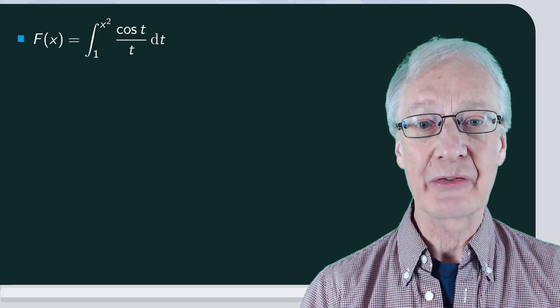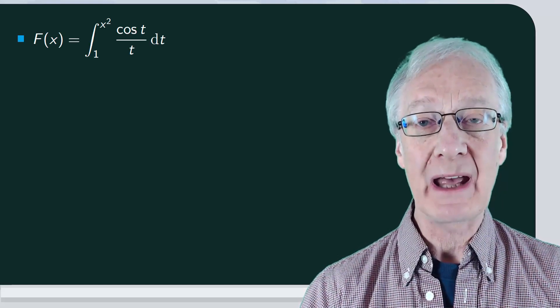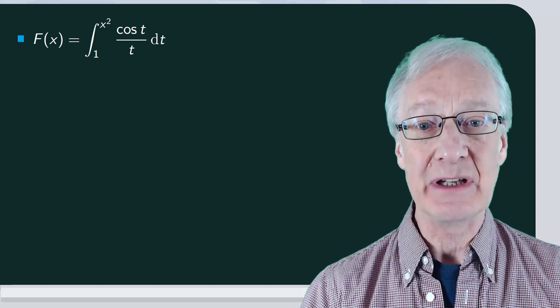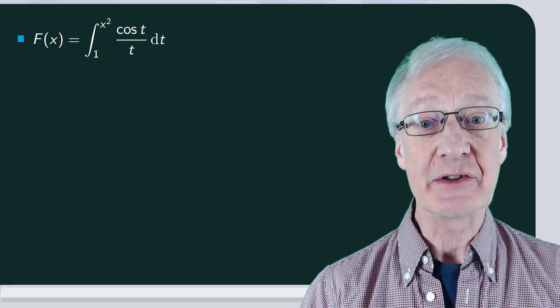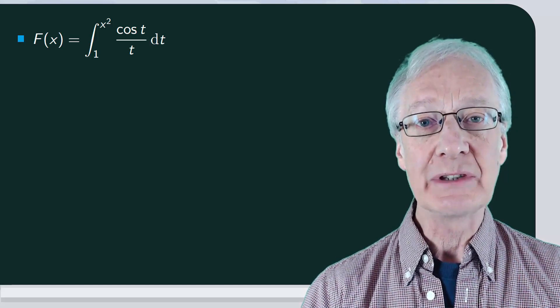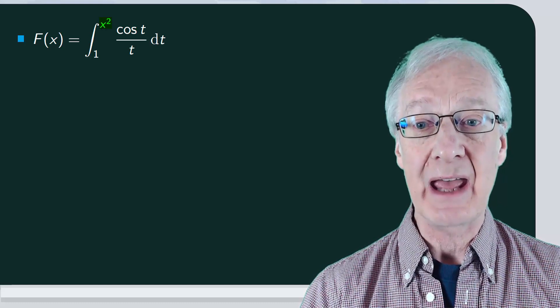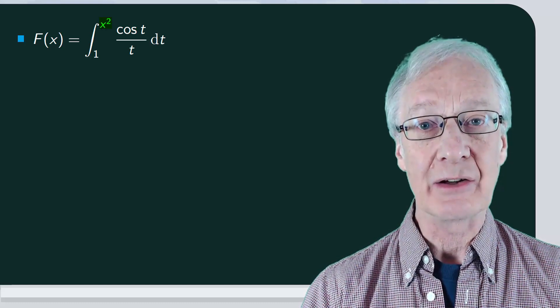Now we'll look at a different example. In this, f of x is the integral between 1 and x squared of cos t over t dt. And we'll calculate its derivative. The novelty here is that the upper integration limit is x squared instead of x. How are we going to handle this?